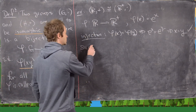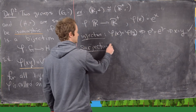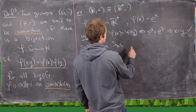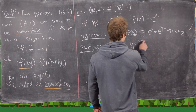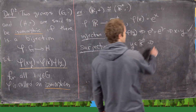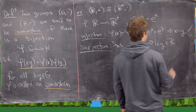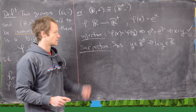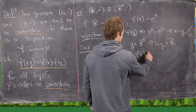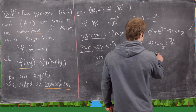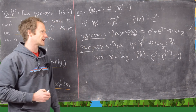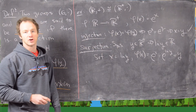Next, is it surjective? Let y be an element of ℝ⁺. From calculus we know ln(y) is some element of ℝ. Setting x = ln(y), we get phi(x) = eˣ = e^(ln y) = y. So we've constructed a preimage for y.